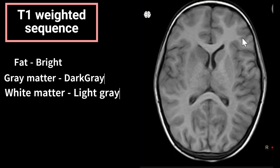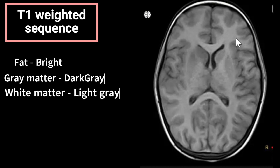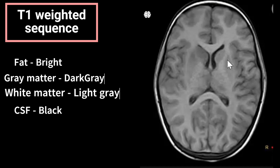White matter appears light gray in T1 weighted images. In layman's terms, gray matter appears gray and white matter appears white on T1 weighted sequence — this is the most anatomical sequence as it matches with anatomy. The white matter here is appearing light gray. CSF appears black on T1 weighted images, so the ventricles filled with CSF appear black on T1.